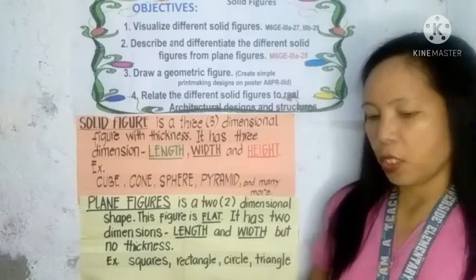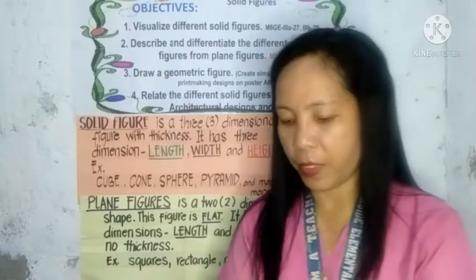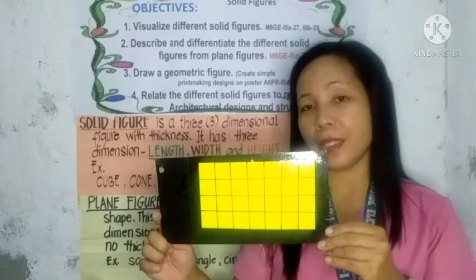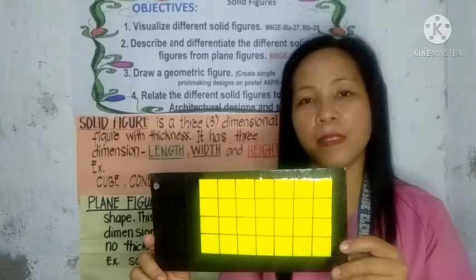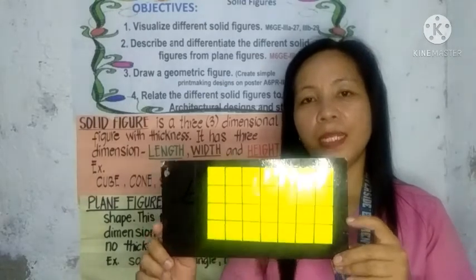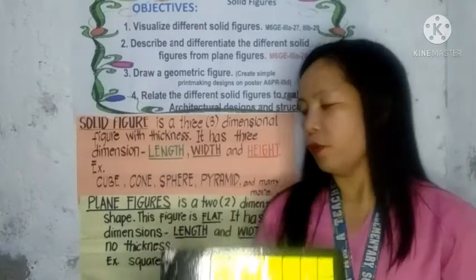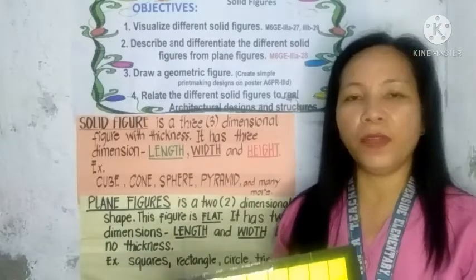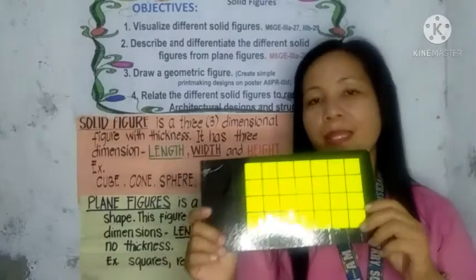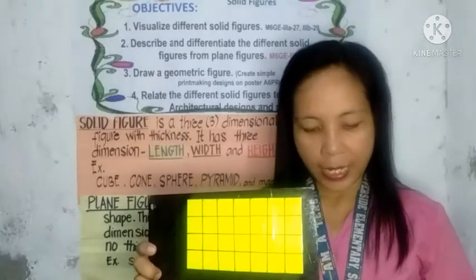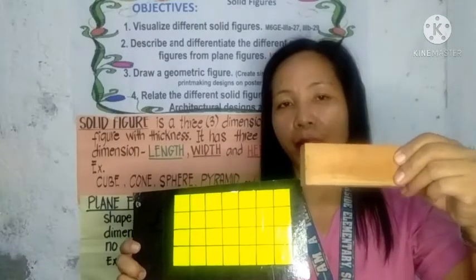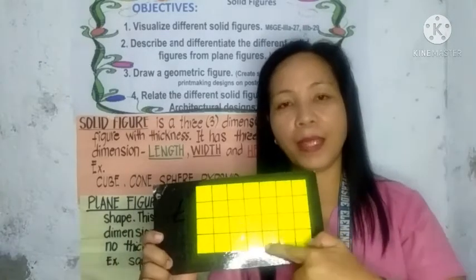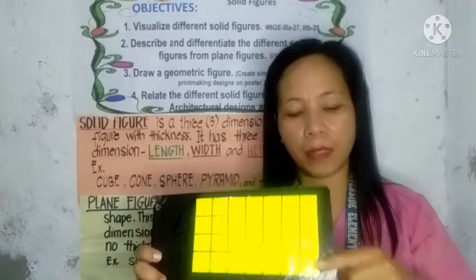Let's look at some examples of plane figures. Here is a rectangle. When we talk about no thickness, a plane figure is simply flat — unlike a solid figure which has thickness. A plane figure is thin and flat.